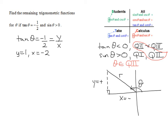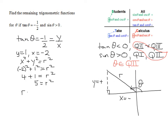Now we know X and Y, and we can always find R using the Pythagorean theorem: X² + Y² = R². So (-2)² + (1)² = R², which gives 4 + 1 = R², so R² = 5. Remember, R is always positive, so R equals the square root of five. Now we know X, Y, and R and can find any of the trig functions.